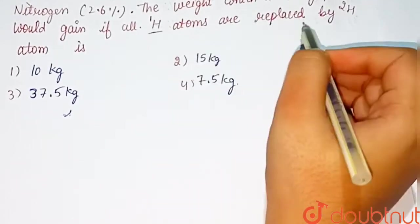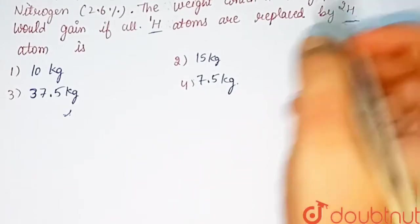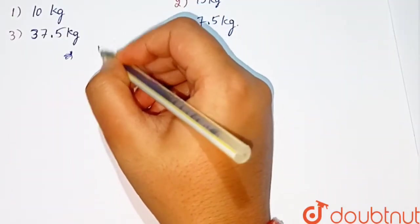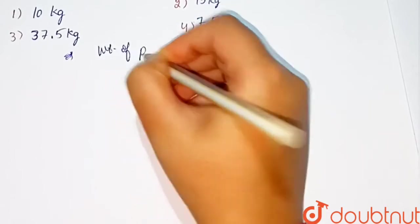According to the question, weight of person equals 75 kg. Mass percentage of oxygen equals 61.4%, carbon 22.9%.